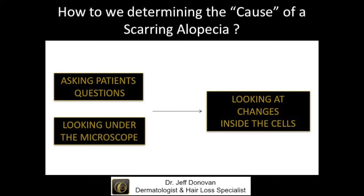For example, if I obtained a biopsy from a patient with lichen planopilaris and one from a patient with frontal fibrosing alopecia and gave these slides to a pathologist, they might not be able to tell these conditions apart under the microscope. However, as a clinician, when I'm looking at the scalp I can generally tell them apart quite readily — they have very different clinical features, yet the biopsies are very similar. So using tissue in a microscopic study doesn't take us far in determining the cause of a specific condition.